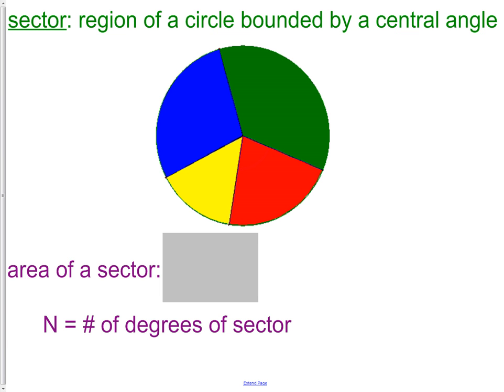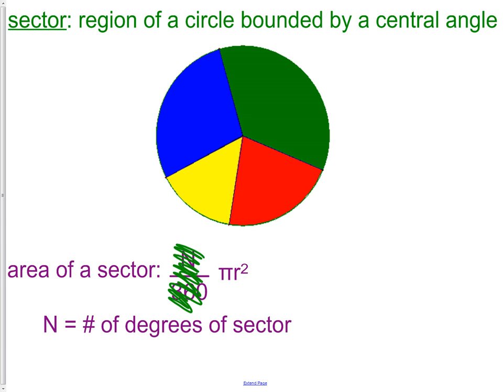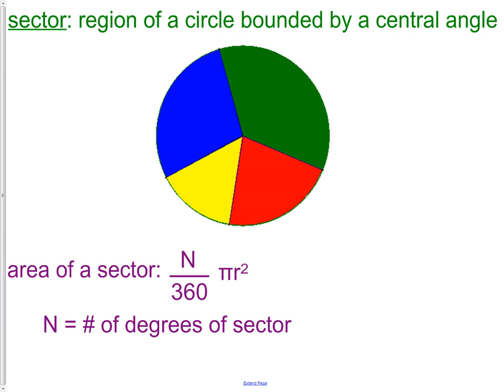Now to find the area of a sector, it's a pretty easy formula. If you cover up the n/360 part for a moment, pi r squared is just the area of a circle. Then we put n over 360, where n is the number of degrees of the sector. If I wanted to find the area of the yellow sector and the yellow sector had 60 degrees, I would put that 60 in place of n. So the degrees go where n is, and r is obviously the radius.